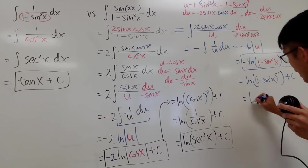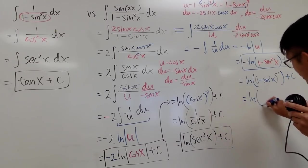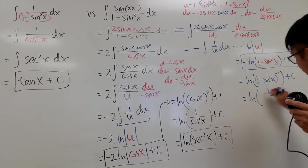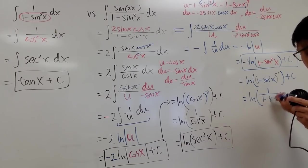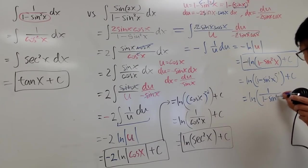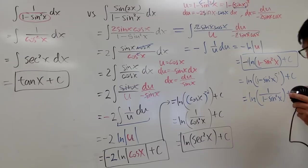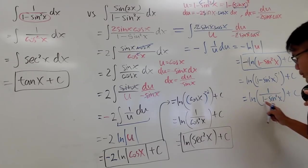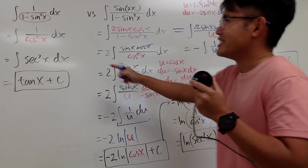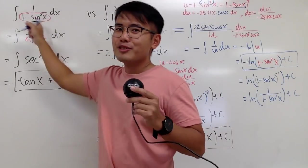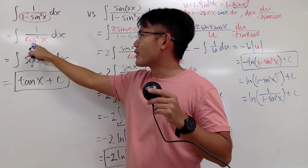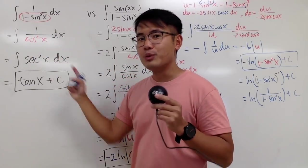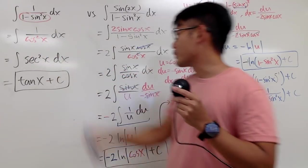This tells us to bring this expression down to the denominator. So we get ln of 1 over that in the denominator, plus C. And look at what this is — that's exactly the same as before. And of course, it's 1 over cosine squared x, which is secant squared x.